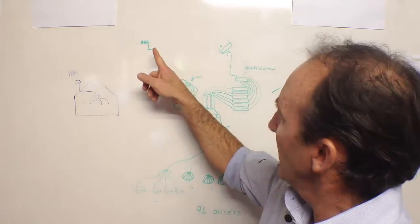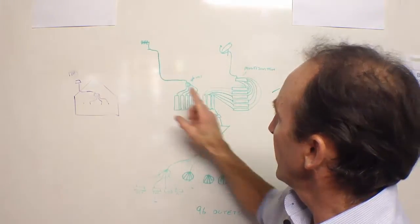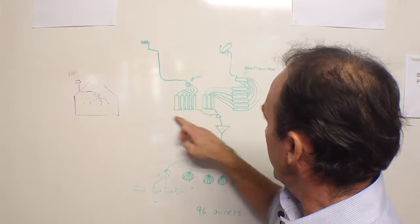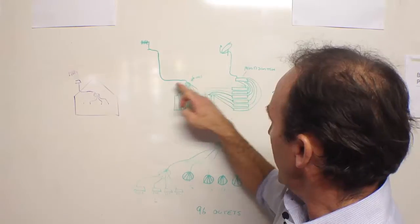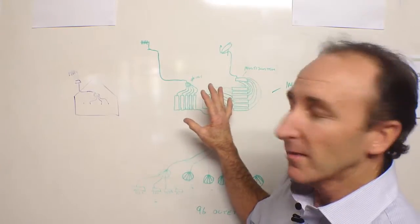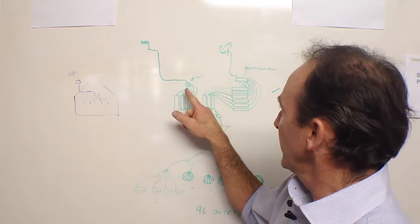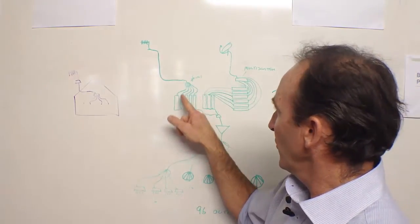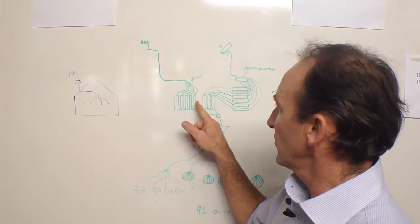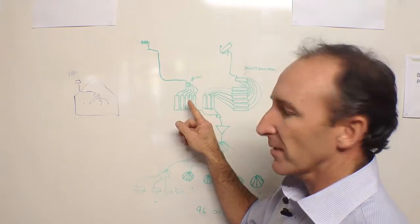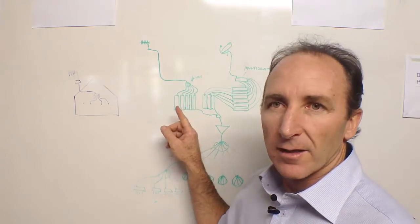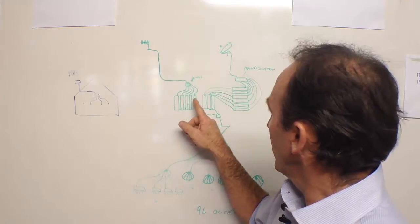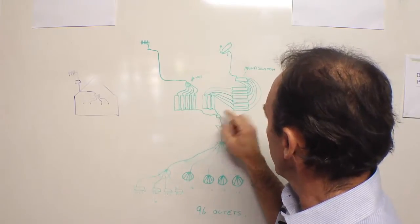In an MATV system you have an antenna on the roof that comes down into this thing here, called a head end. It looks like a heap of boxes, but basically the signal gets split and goes into four, five, or six single channel amplifiers. They clean the signal up, make it nice and neat, and it comes out and joins together.